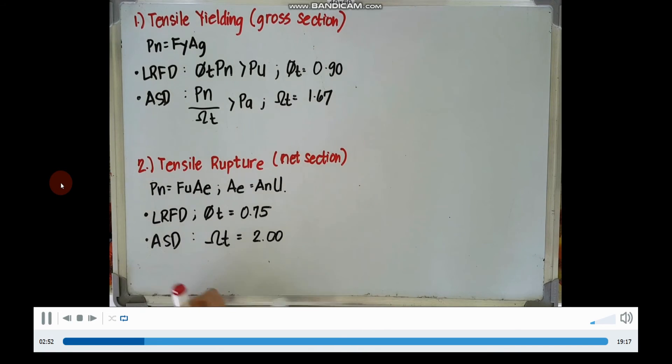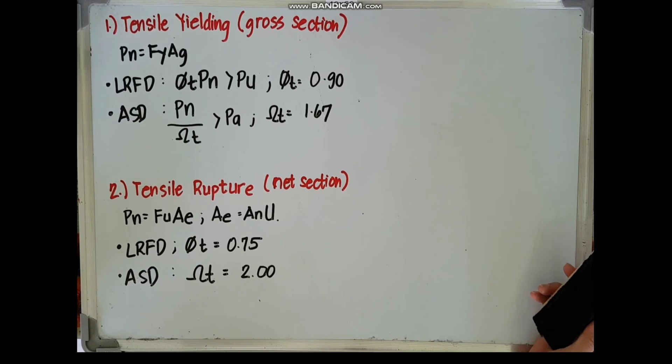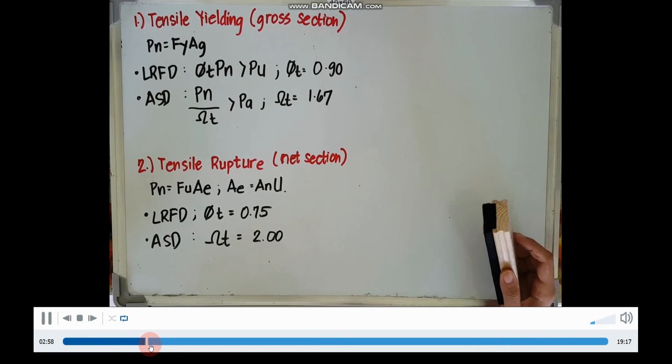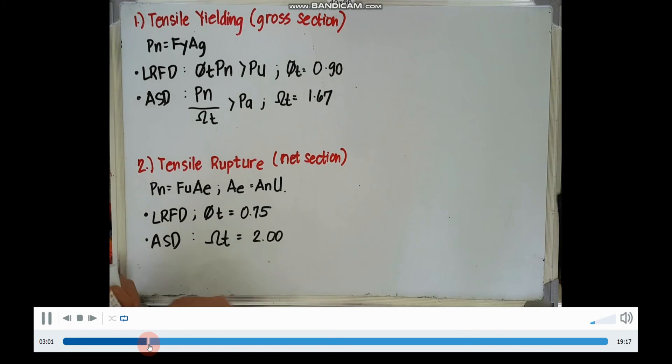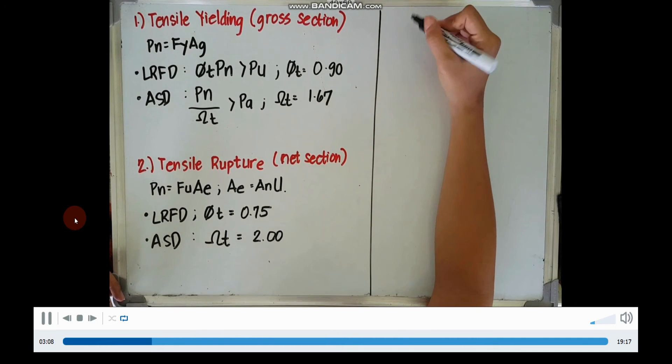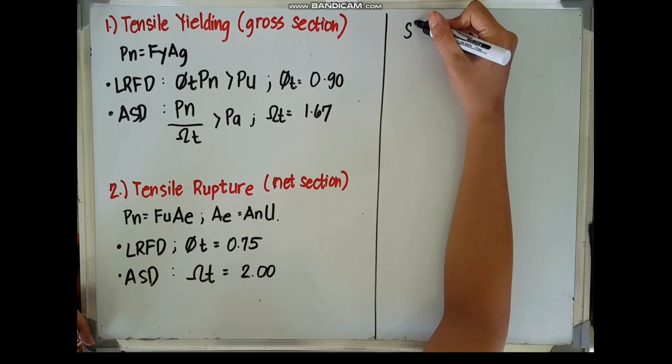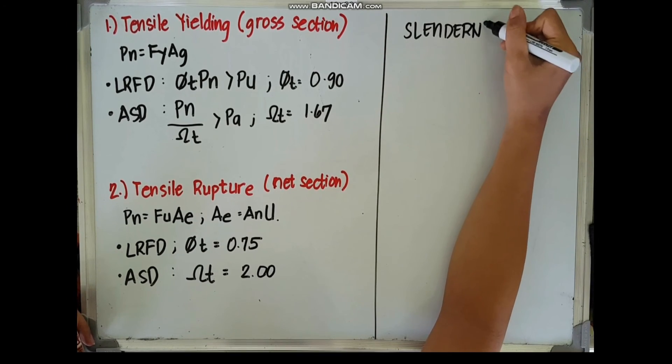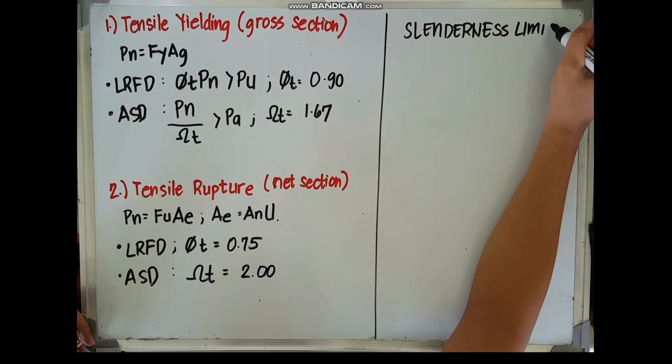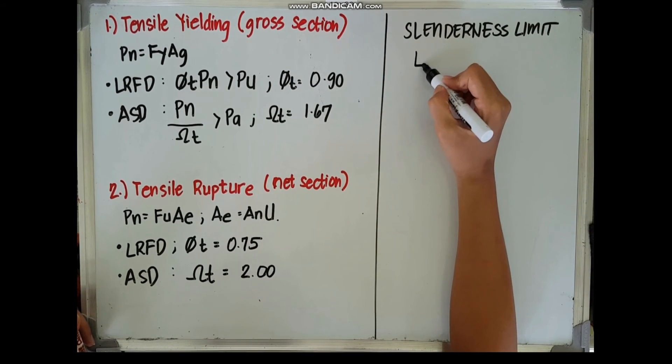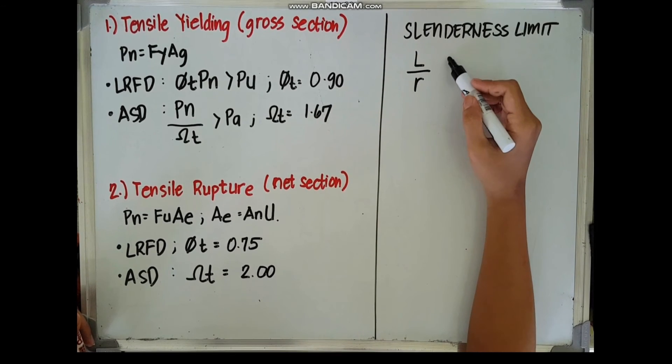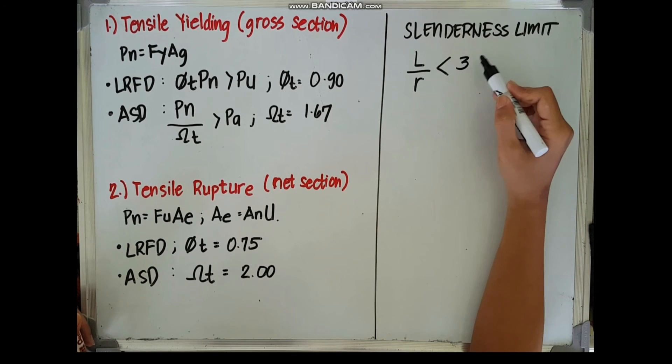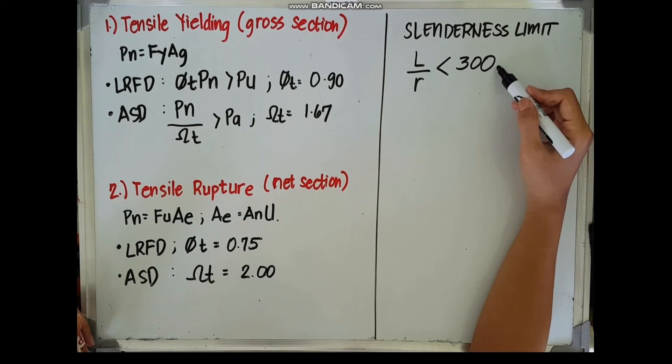By the way, these factors can be found under chapter 5 of our NSCP. Next is our slenderness limit or slenderness ratio, wherein we divide our total length by the radius of gyration and it must be less than or equal to 300.